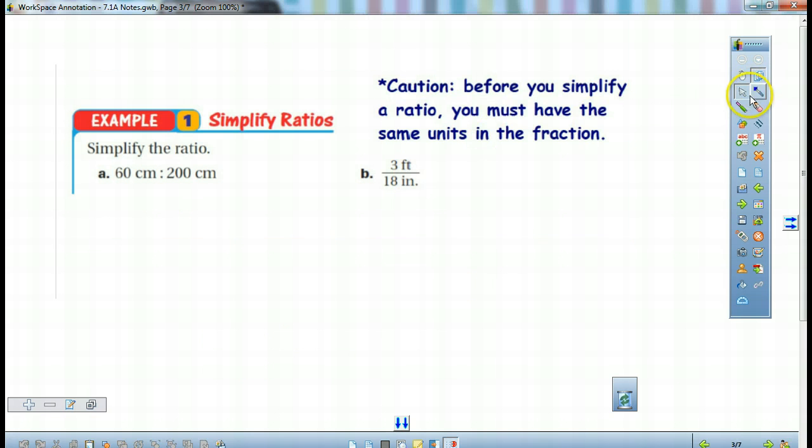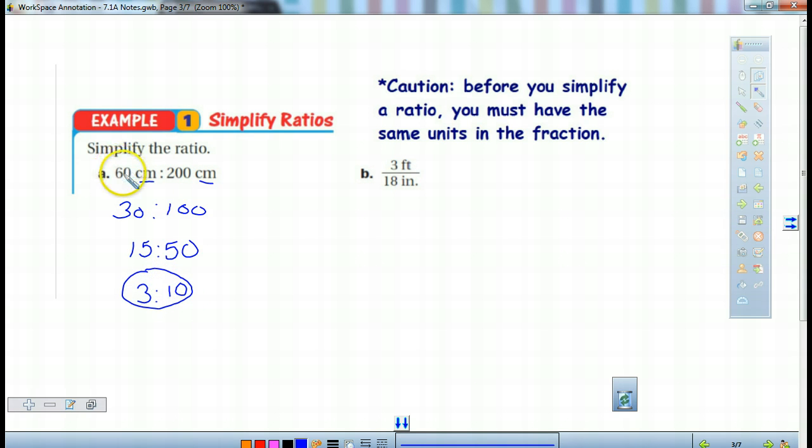If we simplify these, I've got 60 centimeters to 200 centimeters. They are both in centimeters, so we're good. If we divide them both by 2, we've got 30 to 100, but that's still not in lowest terms. So if we divide it by 2 again, we will get 15 to 50. Still not in lowest terms. What can I divide by 5? So 3 to 10. If we would have done it the same way, we could have divided these both by 20, but a lot of us are going to start with 2s. We just have to make sure that we go all the way down to lowest terms.